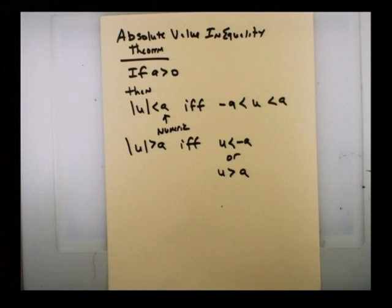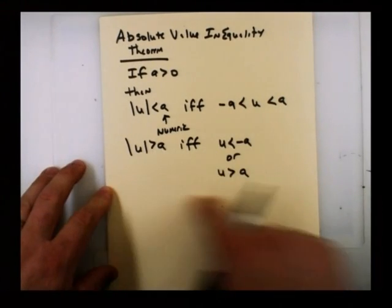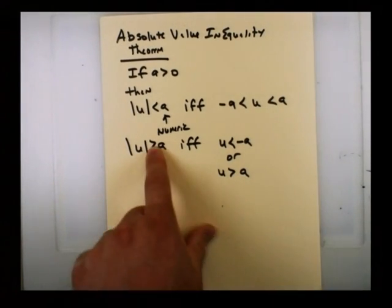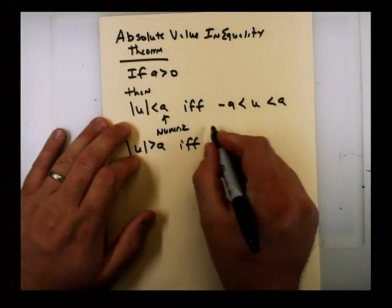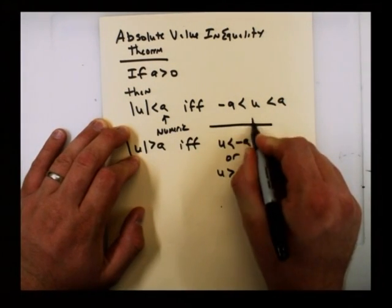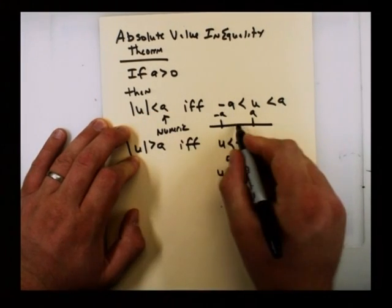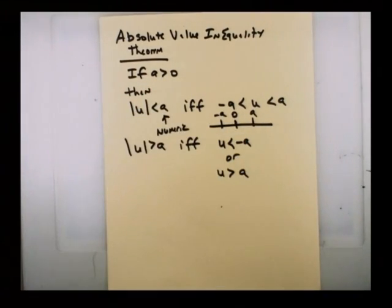For the second one, let's do it if it's greater. If the value of the function is greater than A, that's true if and only if U is less than negative A, or if U is greater than positive A. Now, this is definitely one that I'd like you to stop and have a conversation about. We're going to talk about a visual representation about this in just a second. But talk, why is this true? Why does it have to be less than negative A? Why does it have to be greater than positive A? After all, the absolute value of U is greater than A in this one. Go ahead and stop for a second and have a conversation about that question.